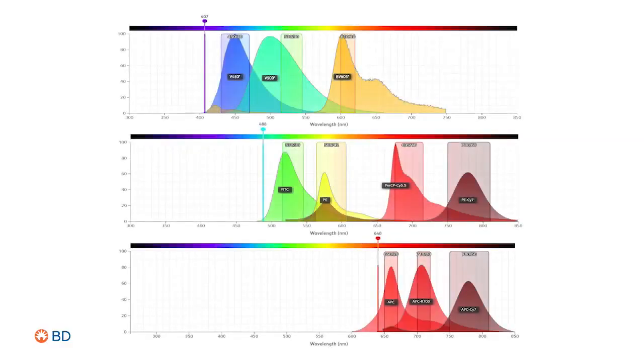Here you can see a 10 fluorochrome panel on a 10 color cell analyzer. In this case, there is significant spectral overlap between multiple fluorochromes.